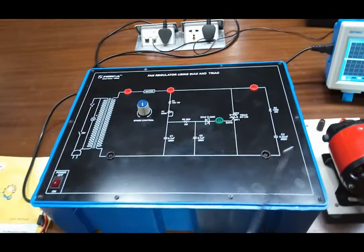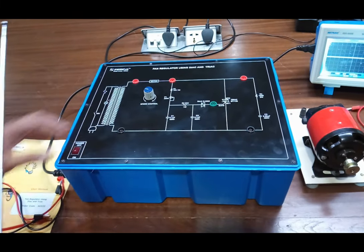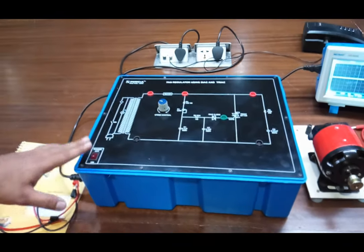This is a circuit of fan regulator and this is the potentiometer for controlling the speed. This is a power on-off switch for this.